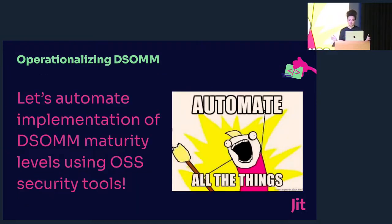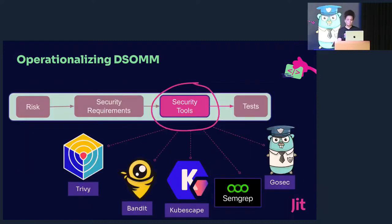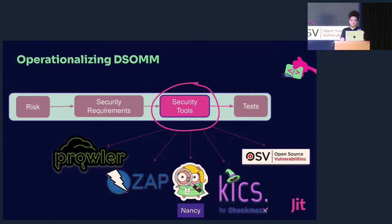Now we have our three action items, and we need to find the best open-source tools for the mission. This is really the fun part for us — we love open source. It's truly community power, and all of these tools can be utilized to help you reach those goals and enable DSOMM within your organization. The open source tools we're automating at JIT are: Trivy, Bandit, KubeScape, Semgrep, Gosec, Prowler, Zap, Nancy, KICS, and OSV — and we're constantly adding more.